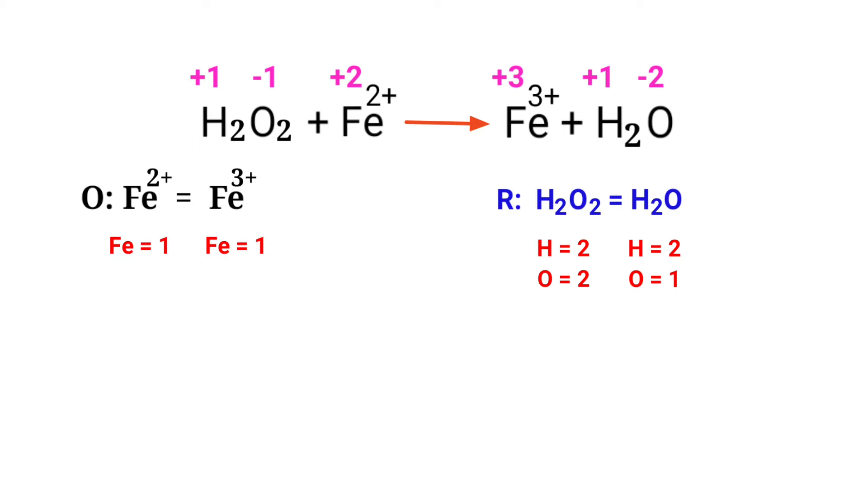Now you can balance the number of atoms in the reduction half reaction. In the reduction half reaction, to balance the oxygen atoms, you can produce water molecules. The oxygen atoms are balanced. Now we need to balance the hydrogen atoms.